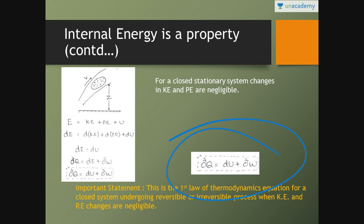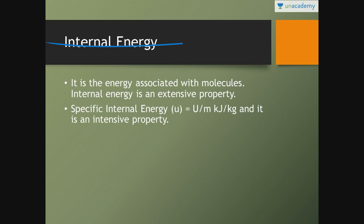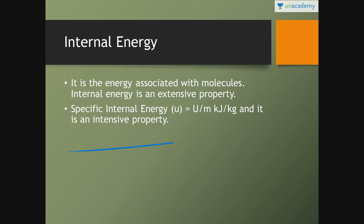To recap: we have discussed two results — first, heat transfer is a path function; second, internal energy is a property. Internal energy is the energy associated with the molecules. It is an extensive property. Specific internal energy, small u, equals U divided by mass M, and it is an intensive property.